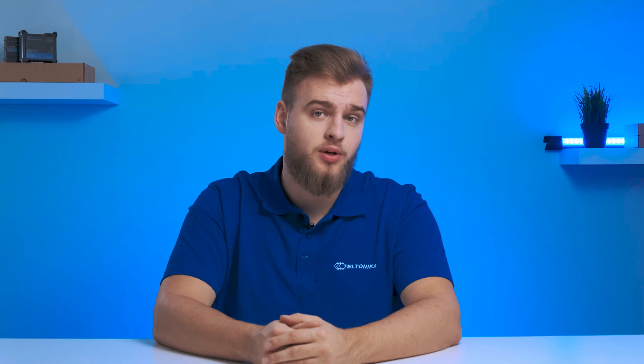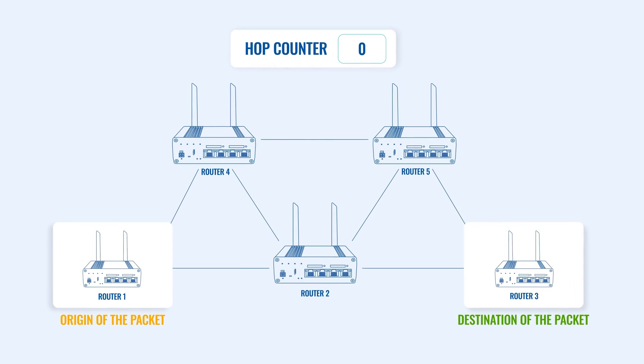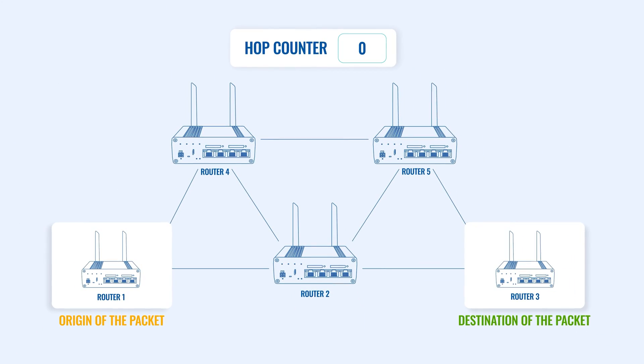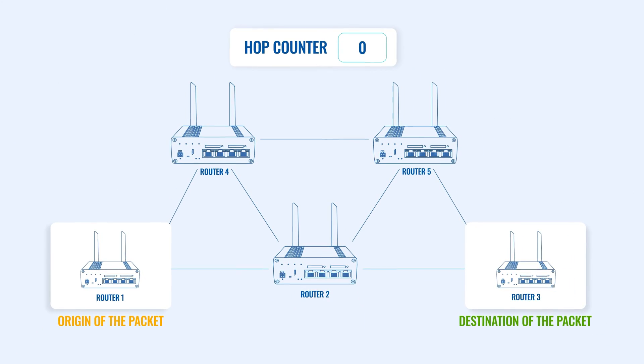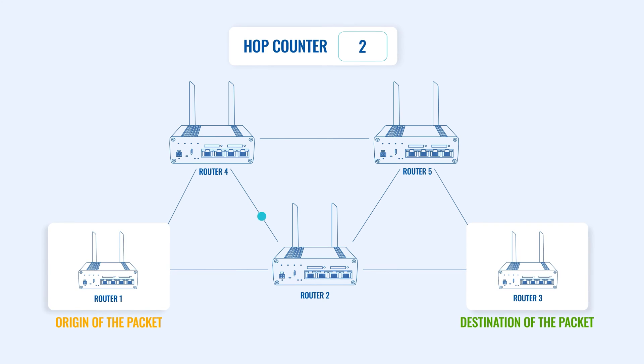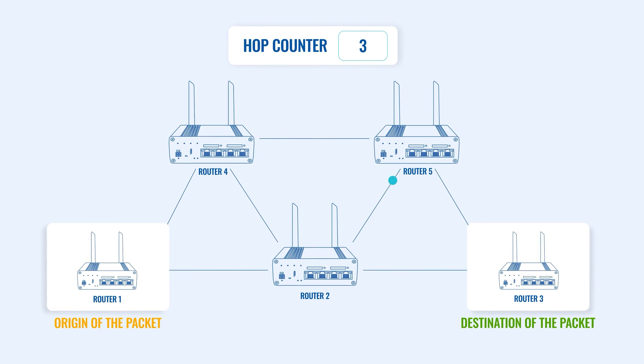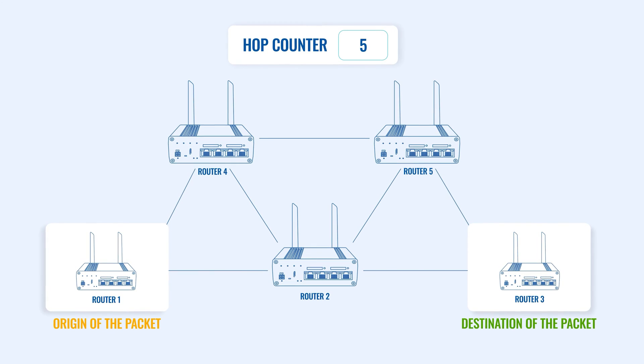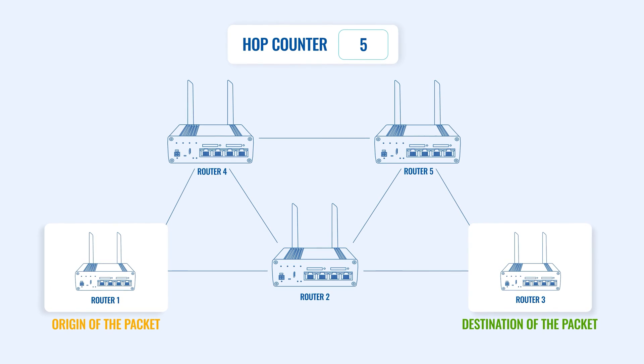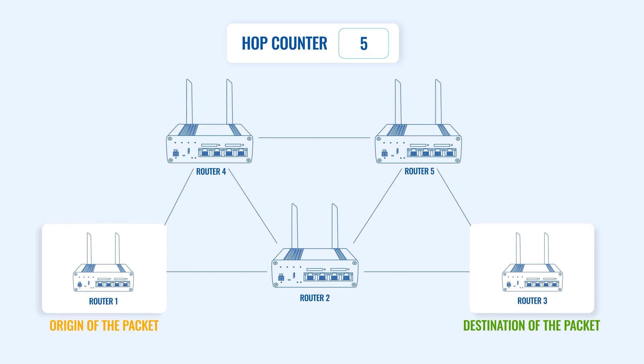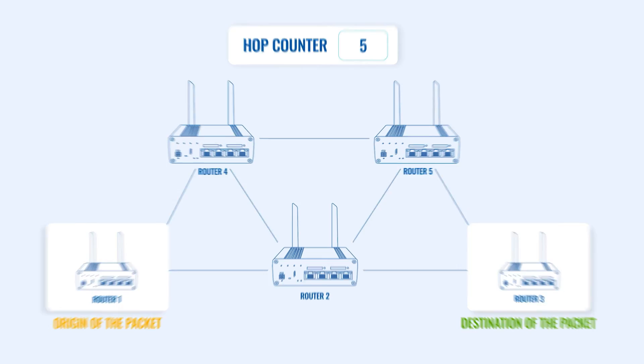So if one router goes down, it won't disrupt the network's connectivity — other routers from the same WAN will maintain uninterrupted connectivity. Dynamic routing selects the best path to the end device by, for example, checking how many hops through different routers it would take to reach it, or by picking a route with the lowest overall cost.